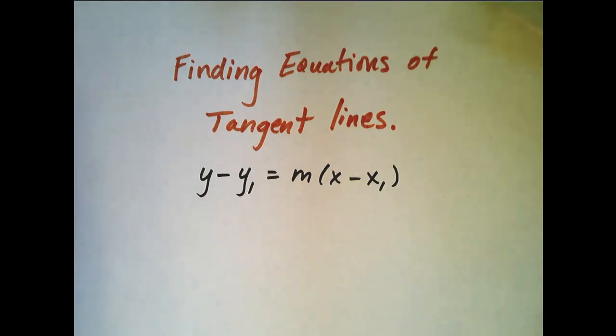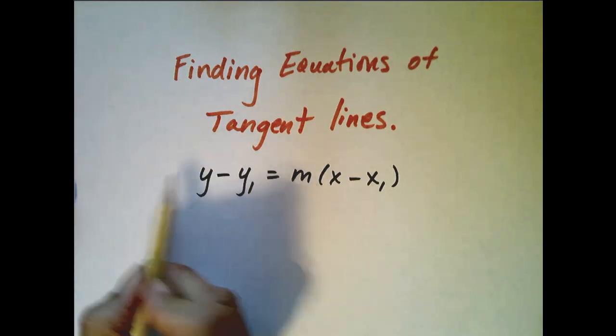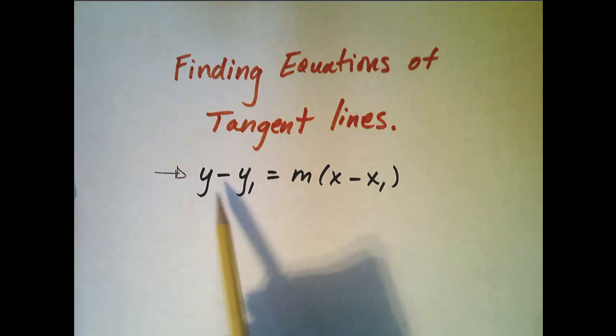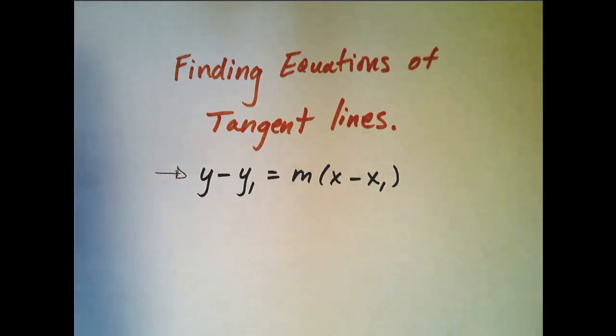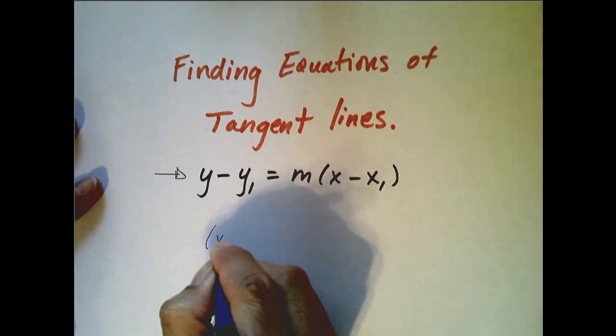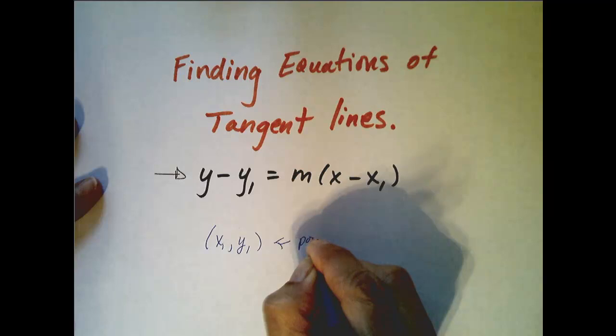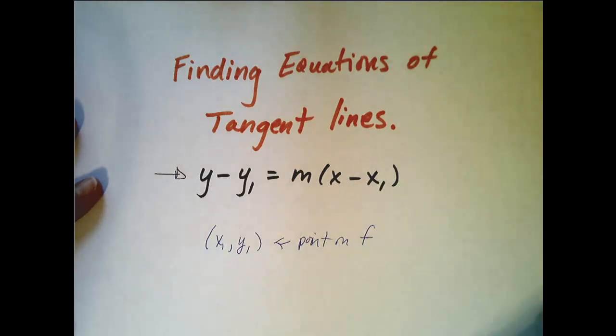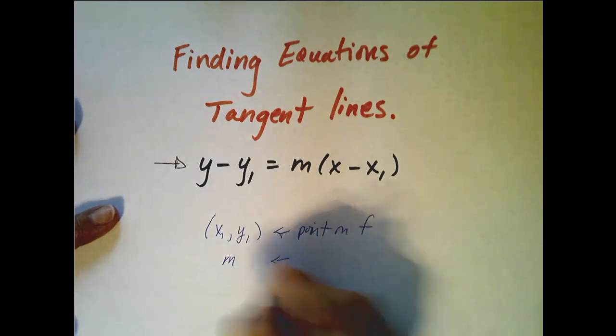First you have to remember how to find an equation of any line. You can use a few different formulas, but my favorite is the point-slope formula: y minus y₁ equals m times x minus x₁, where x₁, y₁ is a point on the graph - a point on your curve that you know, and m is your slope.